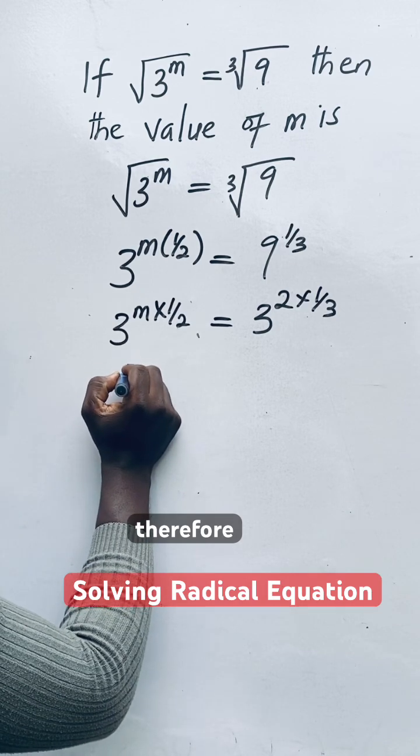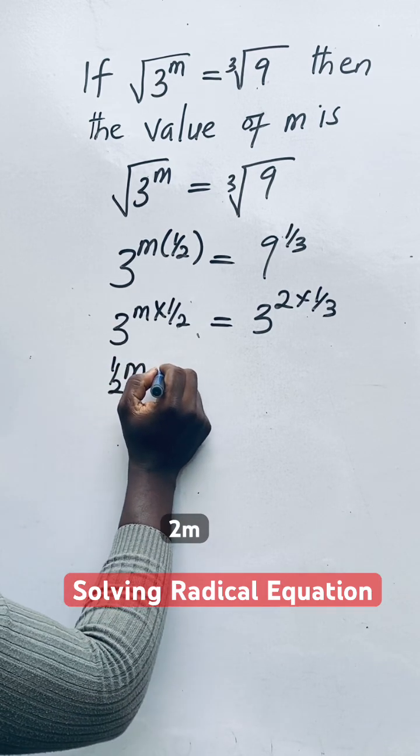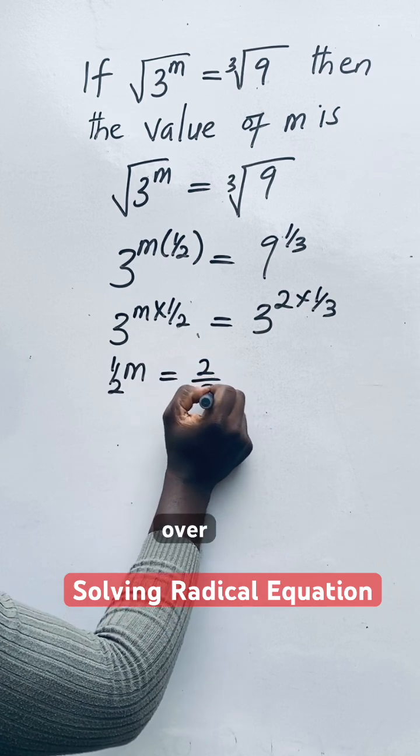So therefore 1 over 2M is equal to 2 over 3.